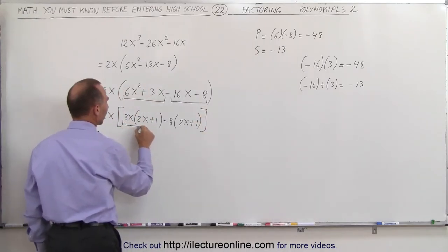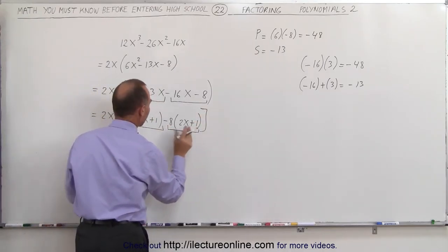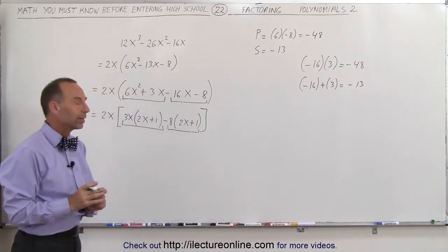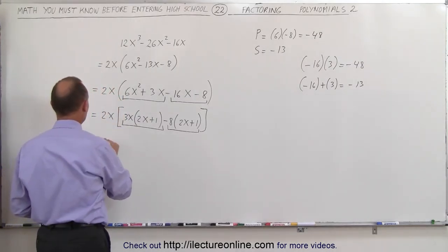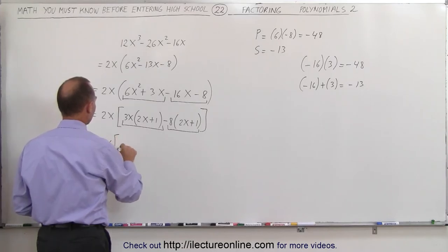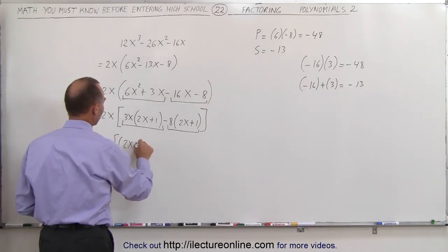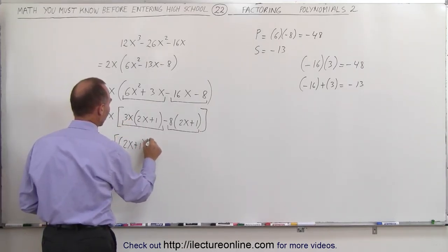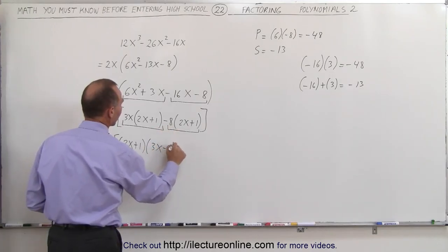Now realizing that if I look at this term and this term, they each have a 2x plus 1 that I can factor out. When I do that, I get 2x times 2x plus 1, and then I have left 3x minus 8.